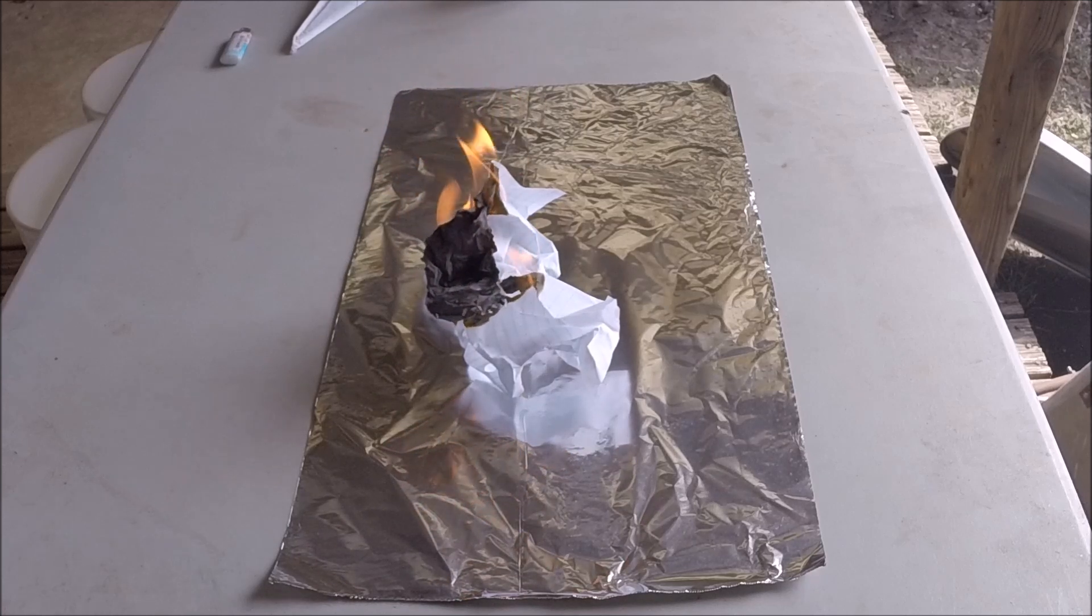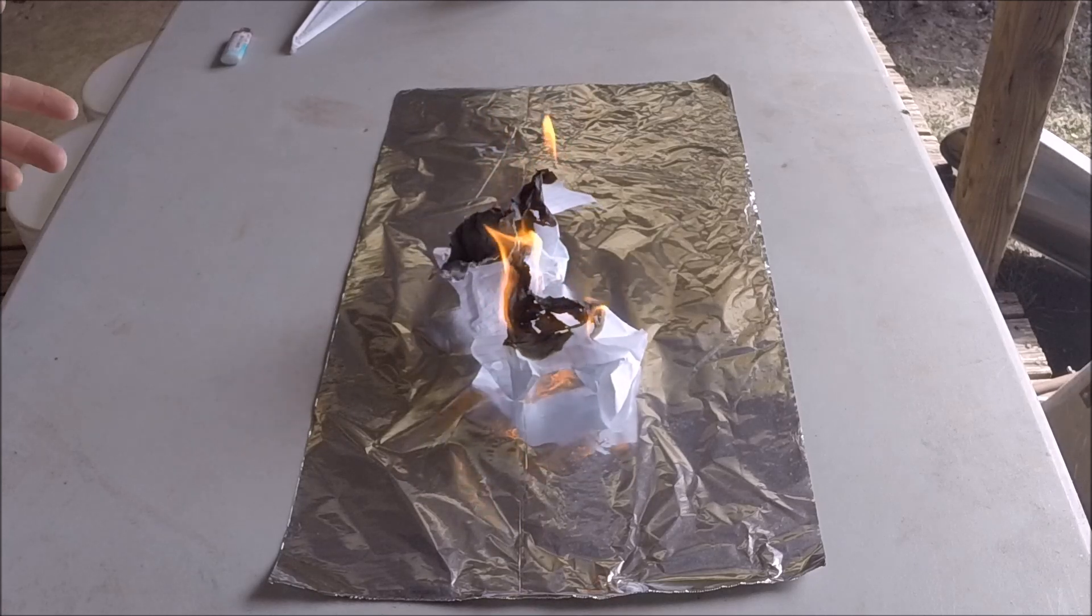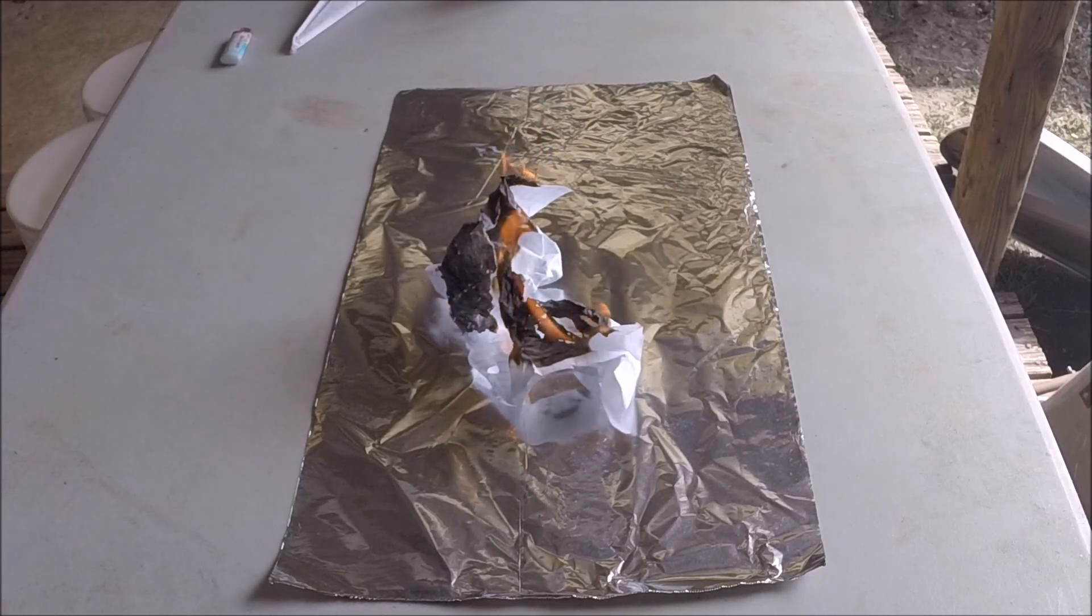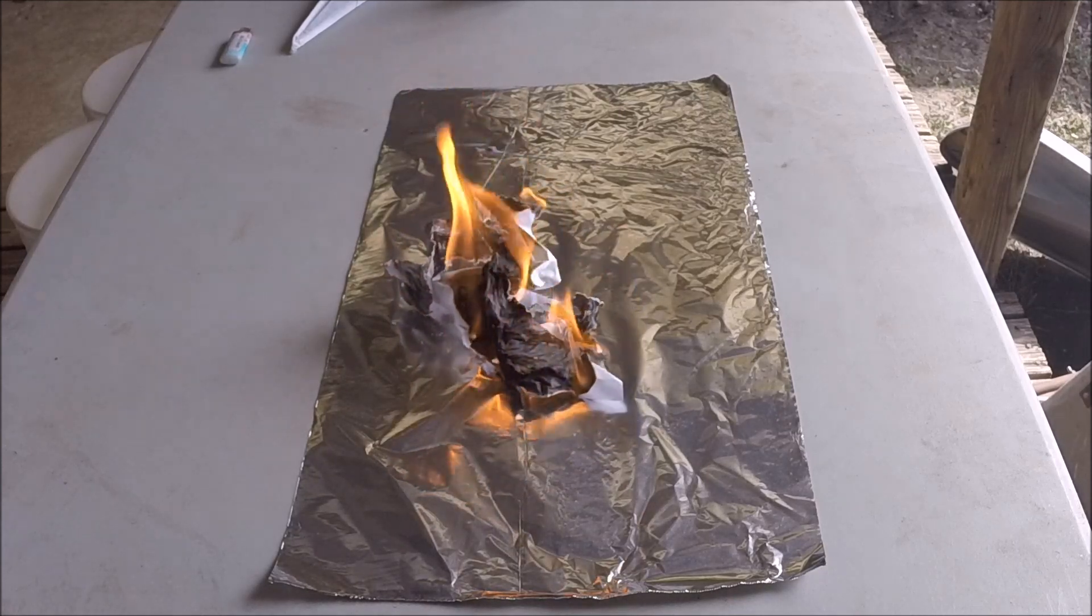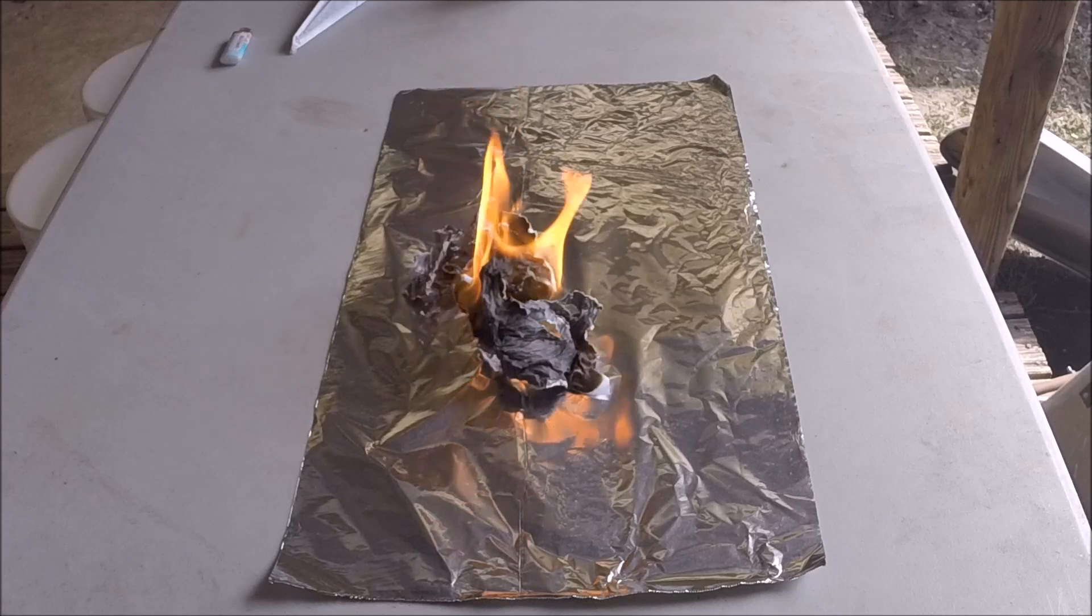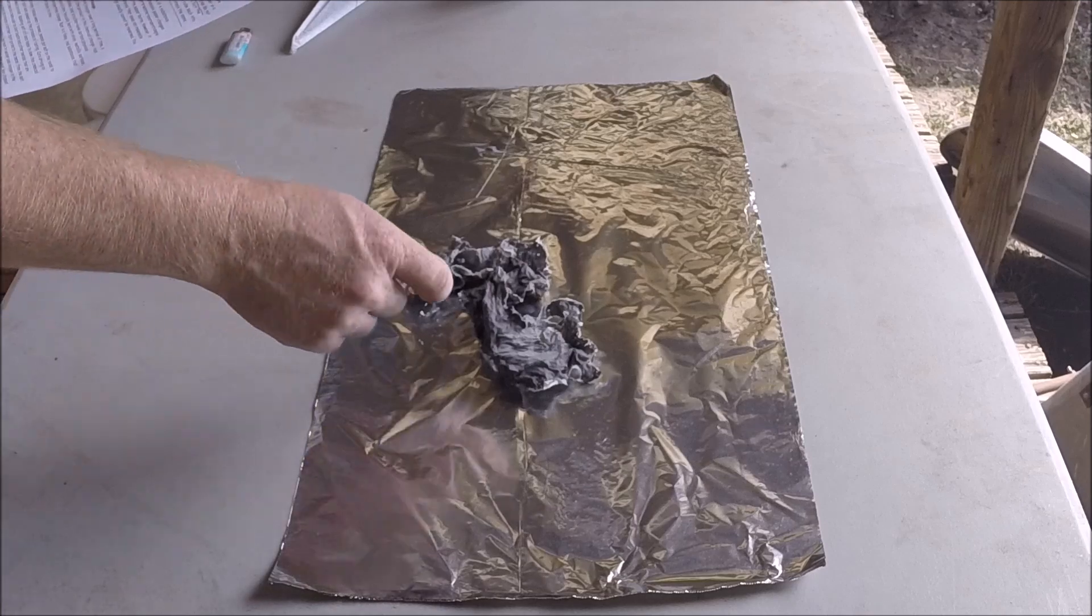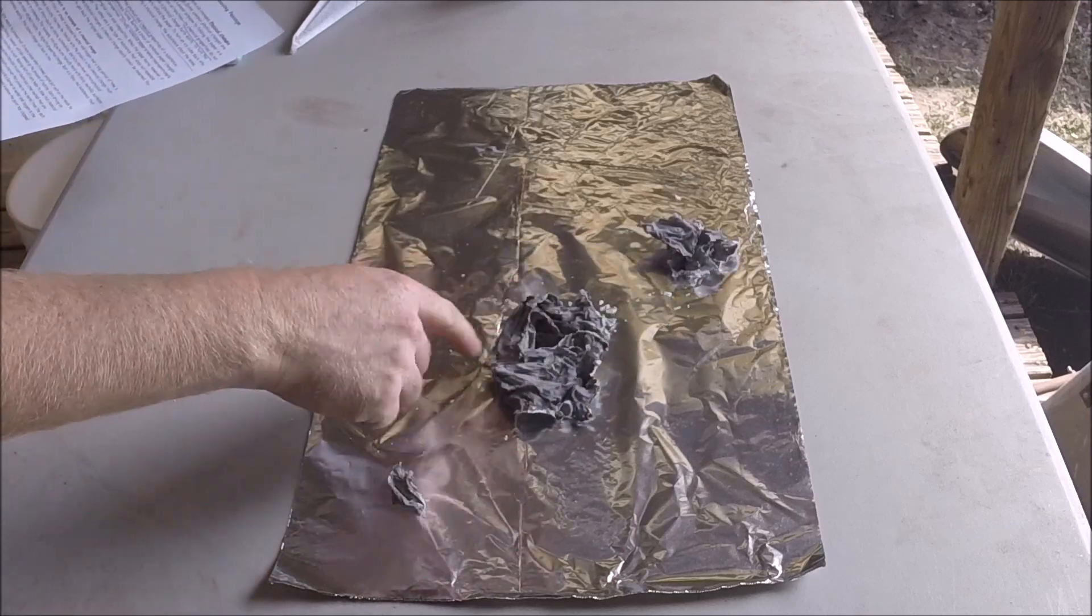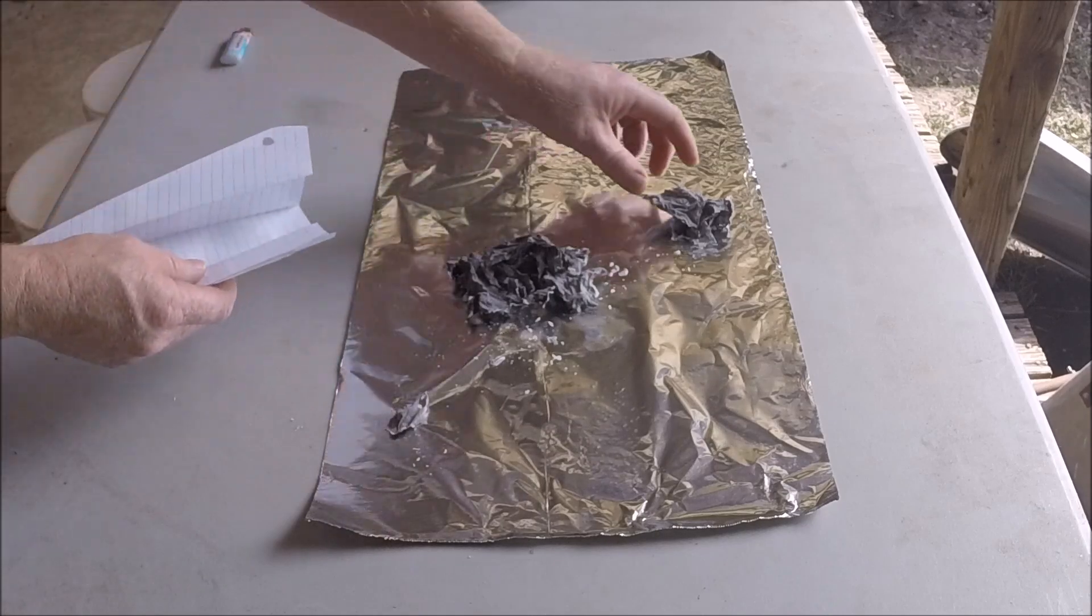Burning a piece of notebook paper changes the paper's physical and chemical properties. Initially it's white and you can crumple it and rip it, but when it burns it changes to black flaky ashes. It's a new type of substance. It does not resemble the notebook paper. It's black. It's flaky. It's totally different properties than the original notebook paper. It's a little grayish.